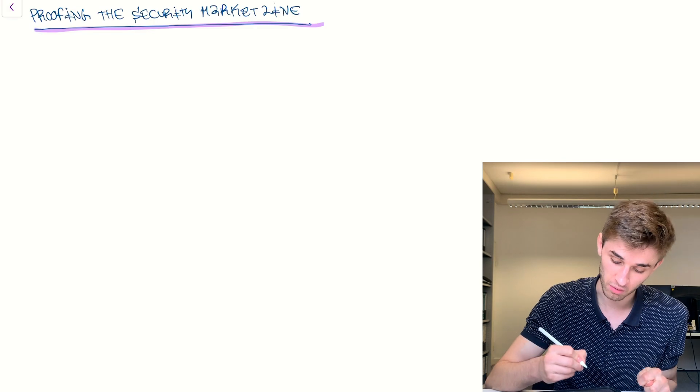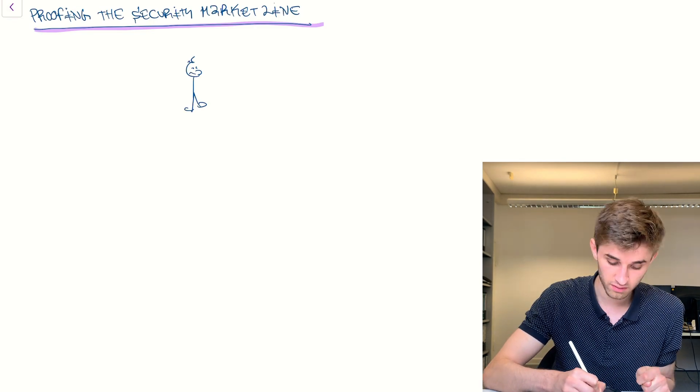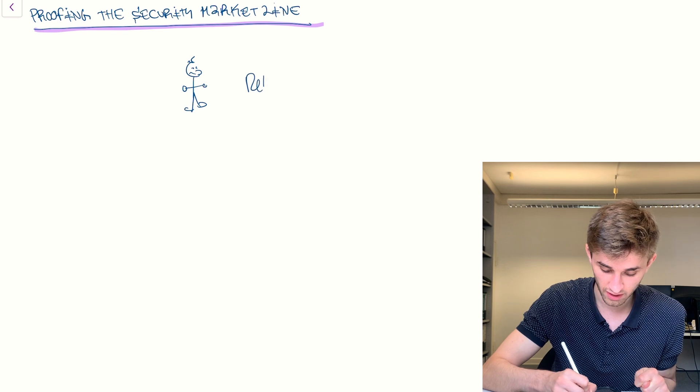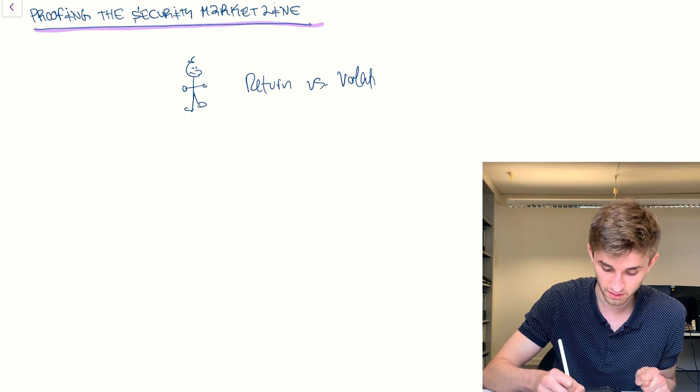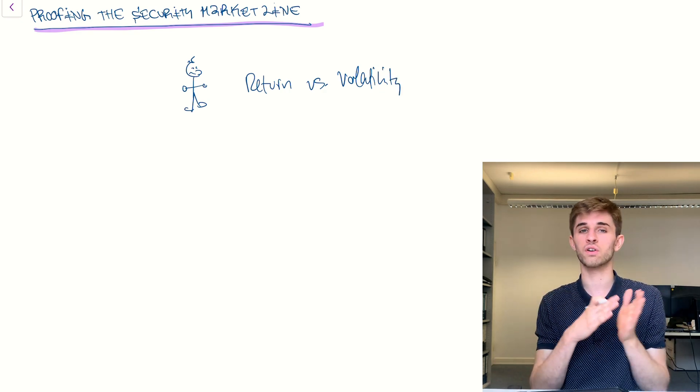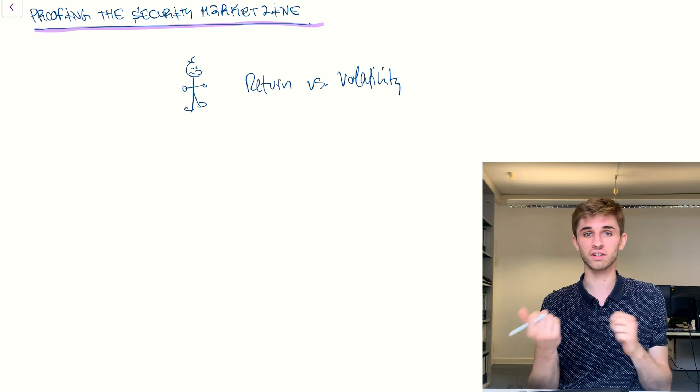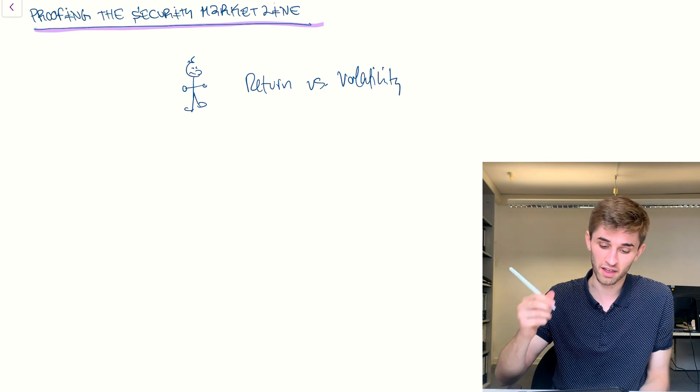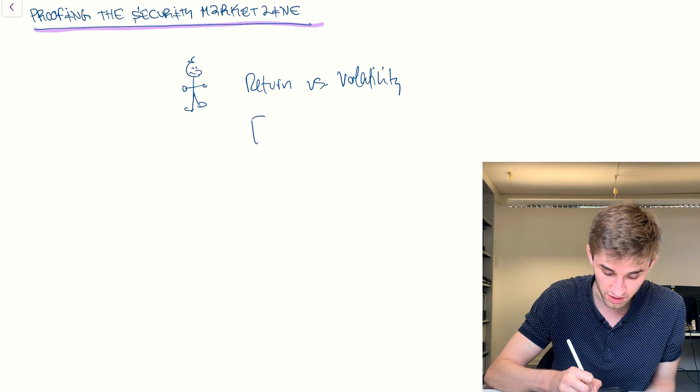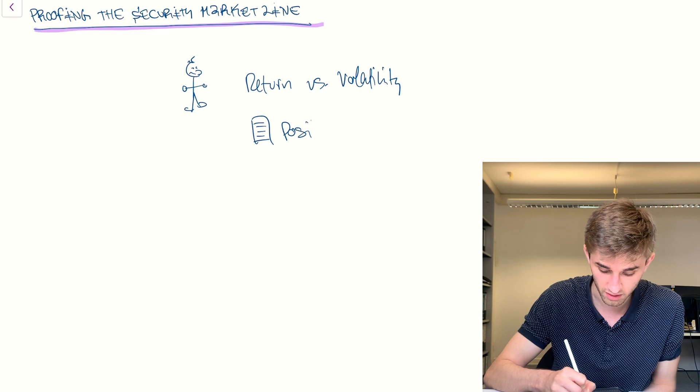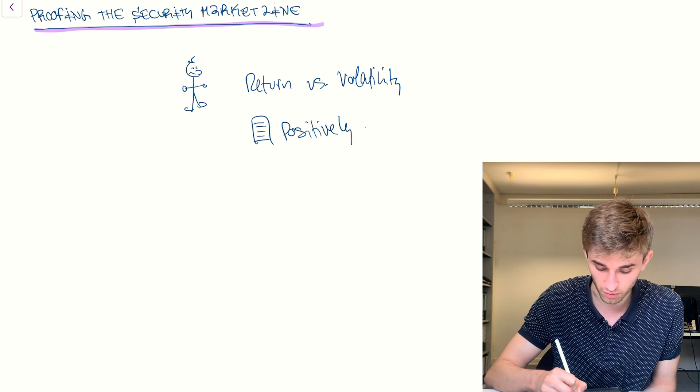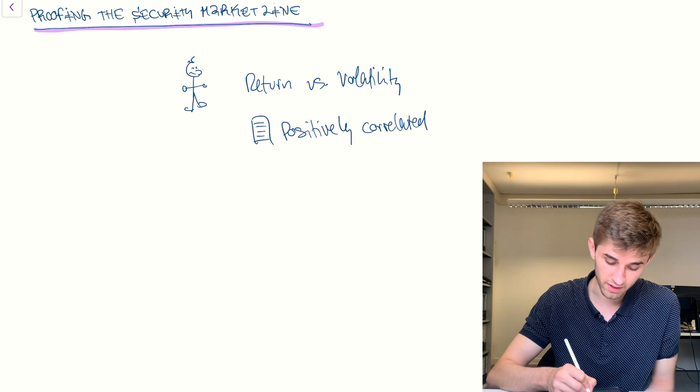We're in the CAPM. So every single investor only cares about the return and the volatility of his overall portfolio. So let's now say we're in our equilibrium state. Everybody holds a tangency portfolio. Everybody's happy. And then we have a new stock in that market. And this stock is positively correlated with the tangency portfolio.